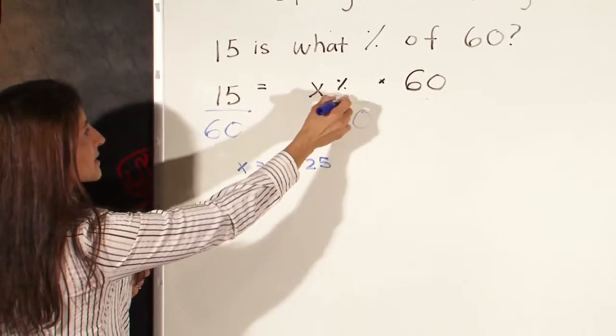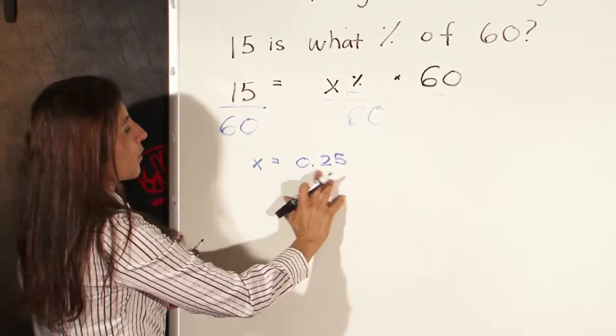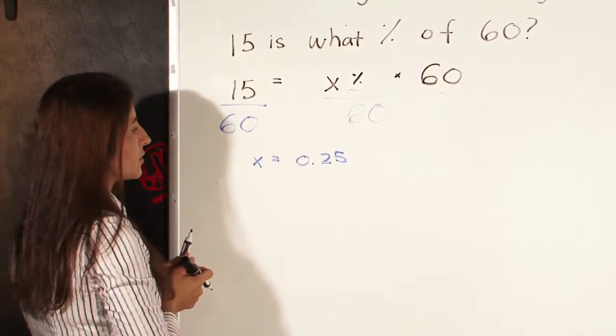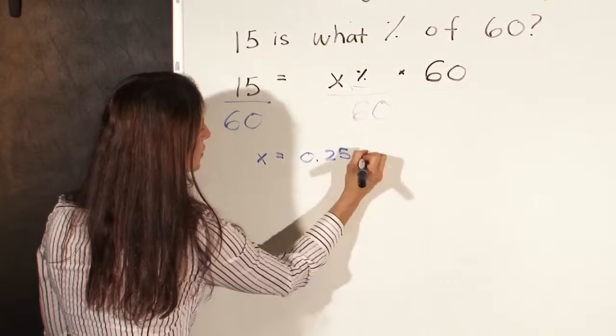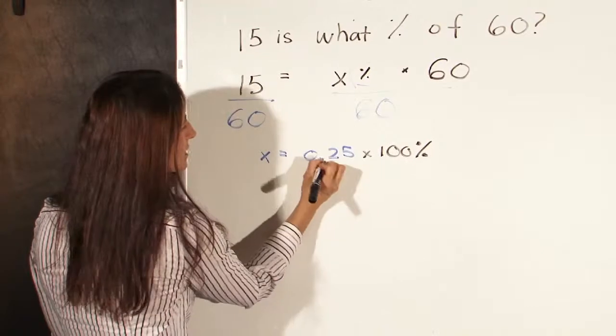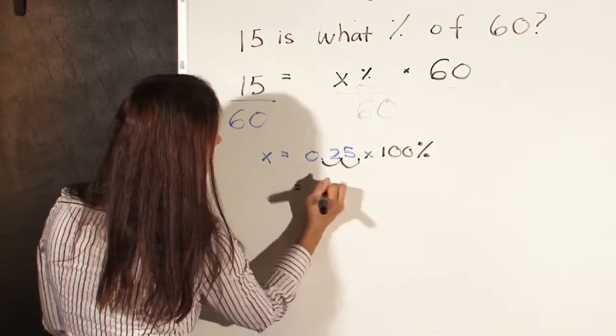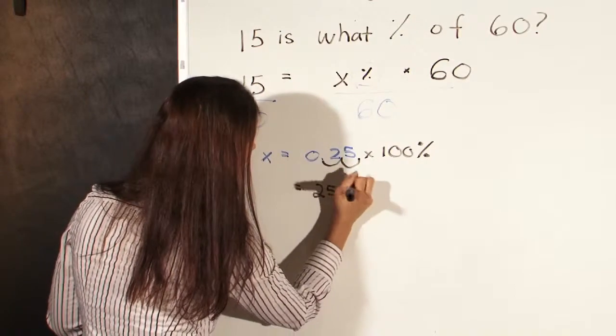And then we remember that x is a percentage, so we want to change the number 0.25 back into a percentage. And we do that by multiplying it by 100 percent, which moves the decimal place two places to the right. And so we're left with x is 25 percent.